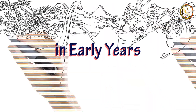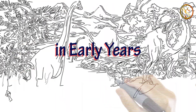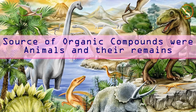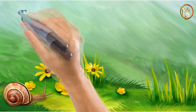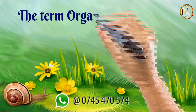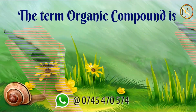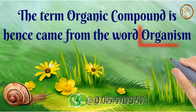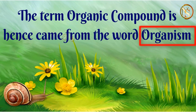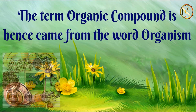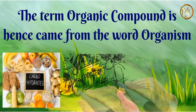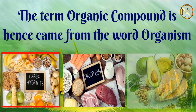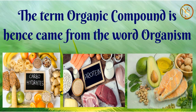In very early years, all organic compounds were obtained from organisms or their remains. The term organic compound therefore came from the word organism. Carbohydrate, protein, vitamins, fats and oil — all these foods are made up of organic compounds.